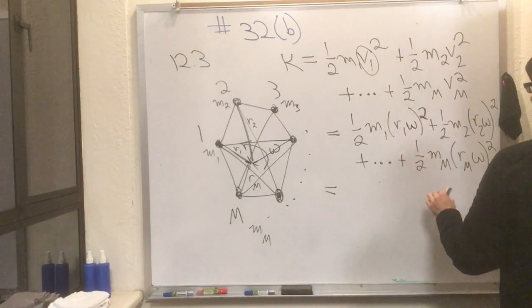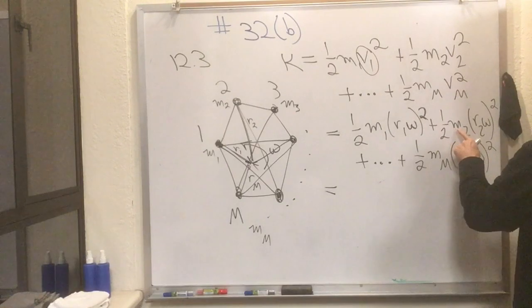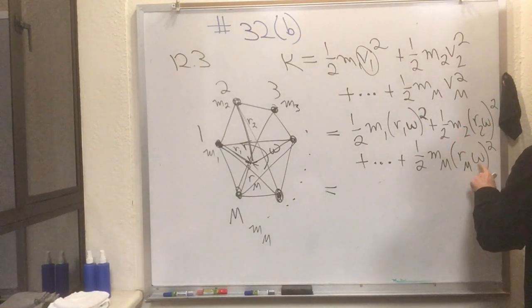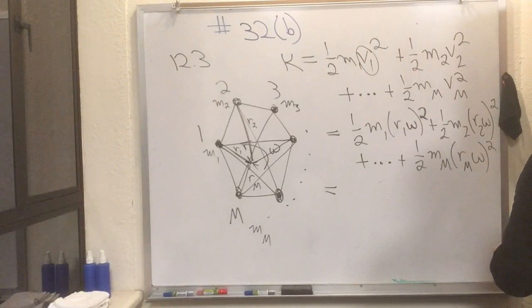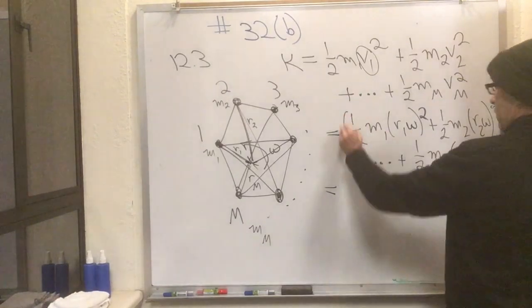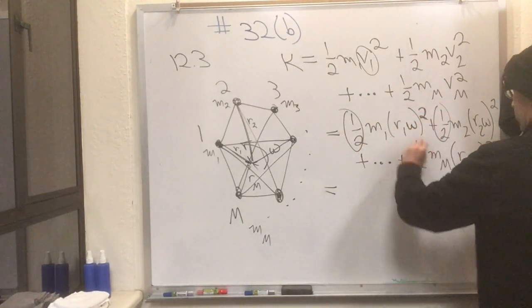But notice that this term here has an omega which we then square, so that term there, if you expanded that out, has an omega squared in it. Meanwhile, this term here, if you expanded it out, has an omega squared in it, and this term has an omega squared in it. In fact, every last term has an omega squared in it. So let's factor that out.